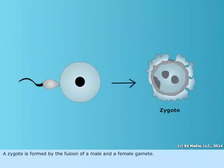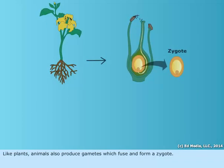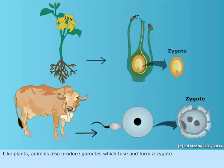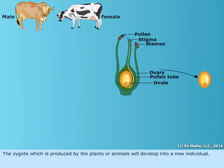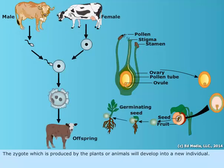A zygote is formed by the fusion of a male and a female gamete. Like plants, animals also produce gametes which fuse and form a zygote. The zygote which is produced by the plants or animals will develop into a new individual.